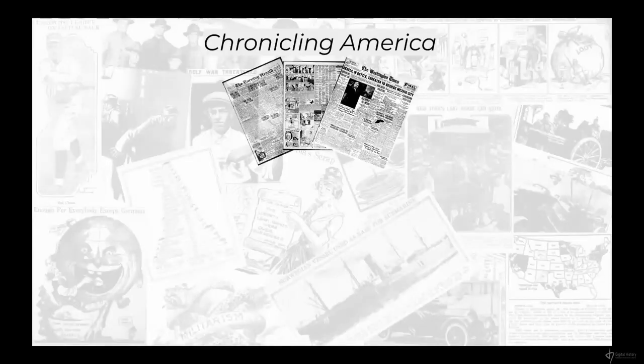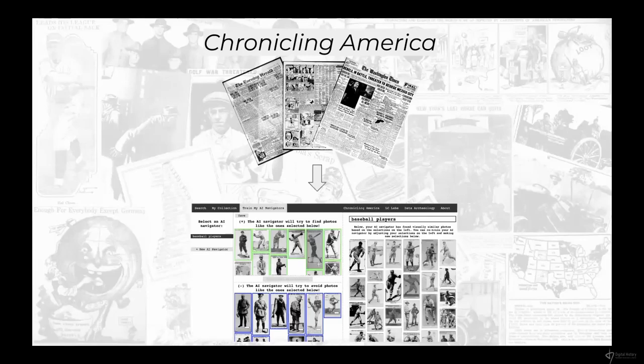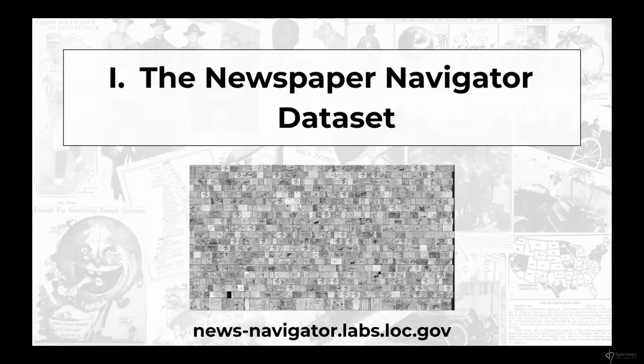Generally speaking, if we can start with raw newspaper pages, the goal is to end up with a fully articulated search interface. That's precisely what I'll be talking through for the first two-thirds of the talk. Let me start with the Newspaper Navigator dataset, which begins with the question of how we extract the visual content.